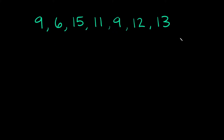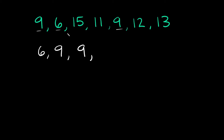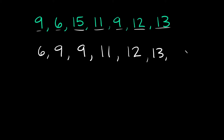Alright, so here's my set of numbers. The first thing I like to do is list my numbers from least to greatest, because it's going to be really helpful for a couple of the problems we have to do. So my smallest number is six, then we have two nines, then an 11, a 12, a 13, and lastly a 15.